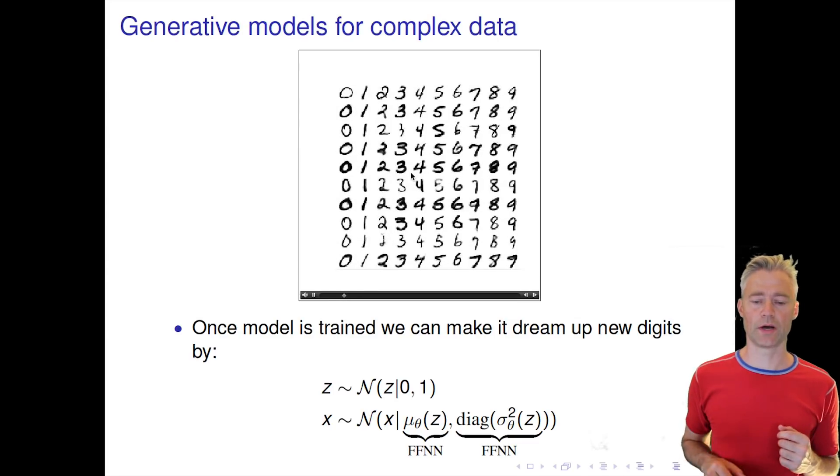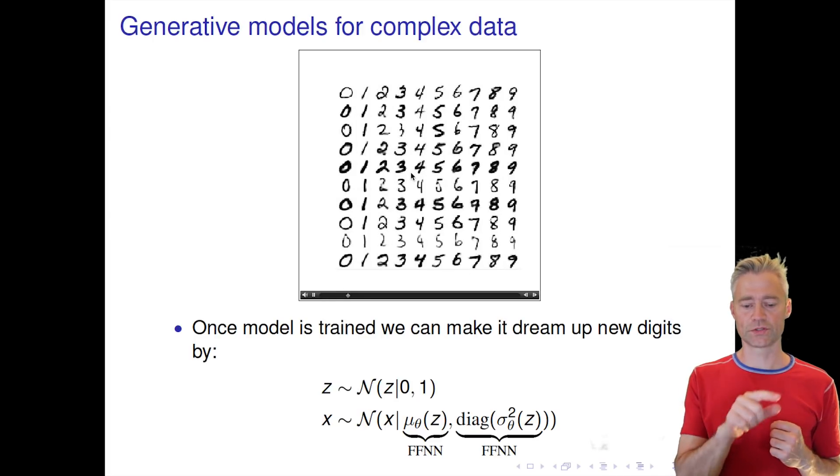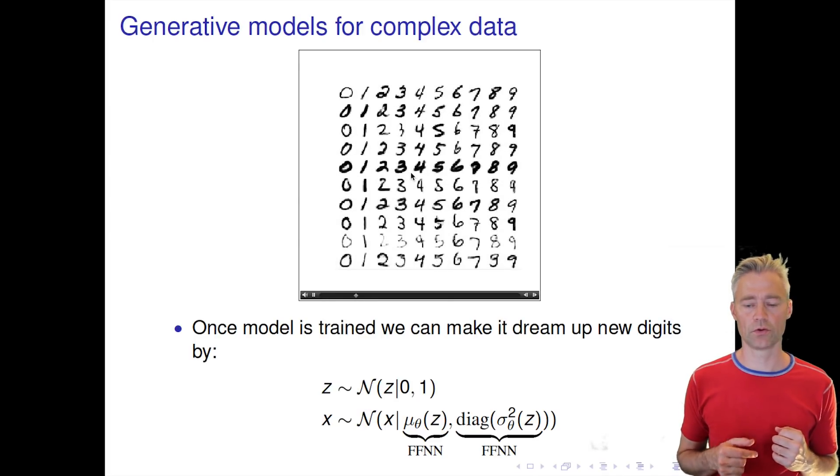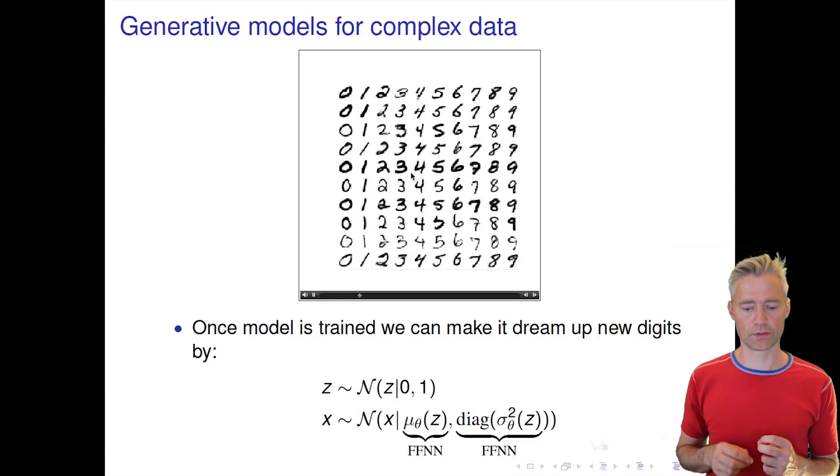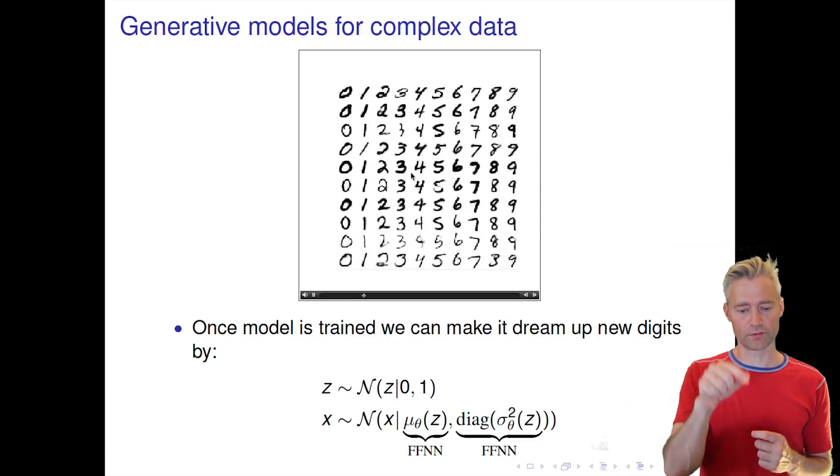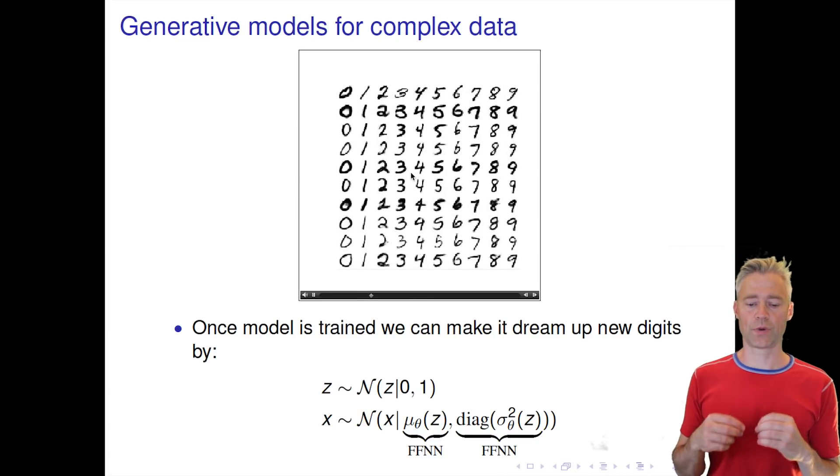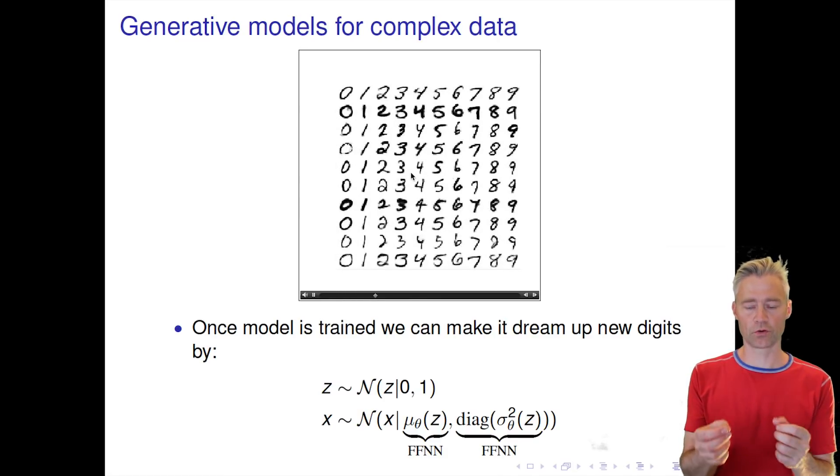Once we have learned the parameters θ and φ, we can just draw from our latent manifold c—just draw this zero-one normal multi-dimensional (there should be an identity instead of one in the slide)—and pass that through our feedforward neural networks for the mean and variance.